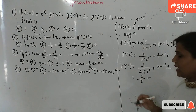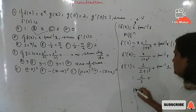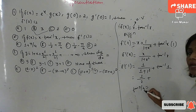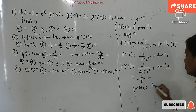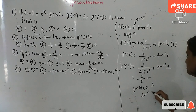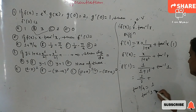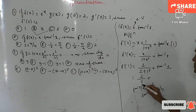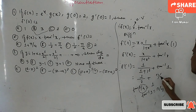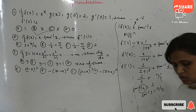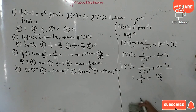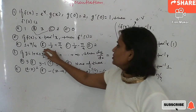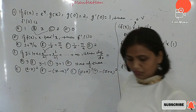tan(π/4) = 1, so tan⁻¹(1) = π/4. Therefore f'(1) = 1/2 + π/4. The correct option is B.